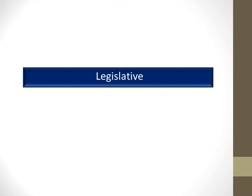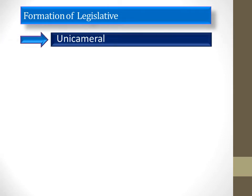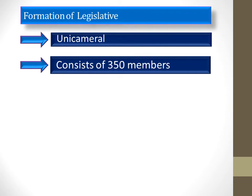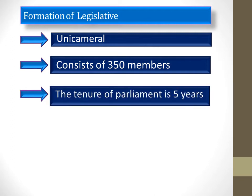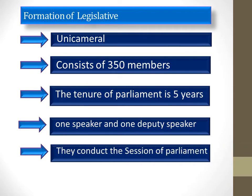Let's explain the legislative group in more detail. Formation of the legislative: it has a unicameral structure and consists of 350 members — 300 members are elected by direct vote and 50 members are selected by indirect vote. The tenure of the parliament is 5 years. It has one Speaker and one Deputy Speaker who conduct the sessions of parliament.